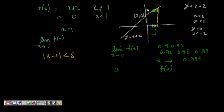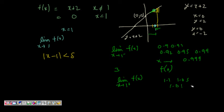From the positive side — limit of f(x) as x tends to 1⁺ — we take x = 1.1, 1.05, 1.01, 1.001, 1.0001, again approaching 1. We find that f(x) is again coming closer to 3.